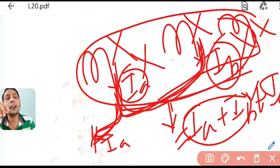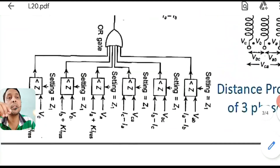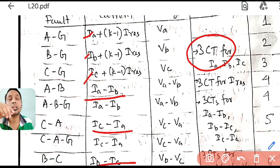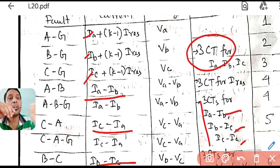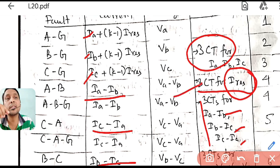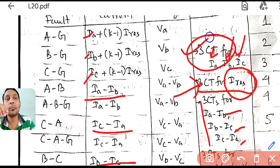Therefore, you need separate CT sets for each purpose. For measuring IA, IB, IC individually: 3 CTs. For measuring IA−IB, IC−IA, IB−IC (line current differences): 3 more CTs. For measuring I_residue = IA+IB+IC: 3 more separate CTs, since those three must first be individually measured and then summed. In total, 9 CTs are required.